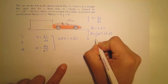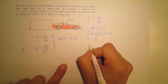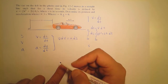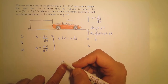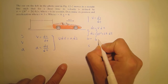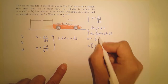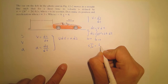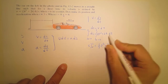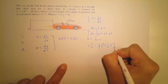We integrate both sides — the left side from the initial position to s, and the right side from the initial time to t. With lower limits at zero, integrating gives: s equals t³ plus t², evaluated from zero to t.